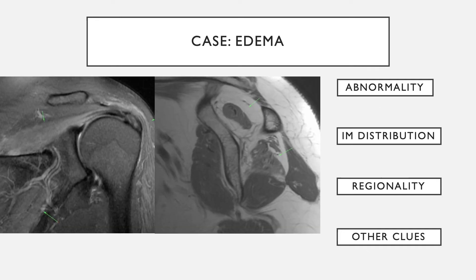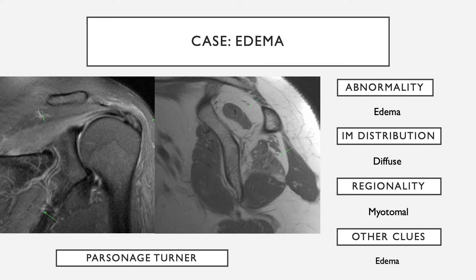Moving to the next case, there is diffuse muscle edema involving both the supra- and infraspinatus — two muscles supplied by the same nerve. There is no discrete lesion along the nerve in the distal portion, so you have diffuse edema in a myotomal distribution without a focal lesion. This would make one think of a neuropathy causing this, such as Parsonage-Turner syndrome — where more proximal nerve involvement or neuritis of the suprascapular nerve is the cause rather than a discrete lesion.